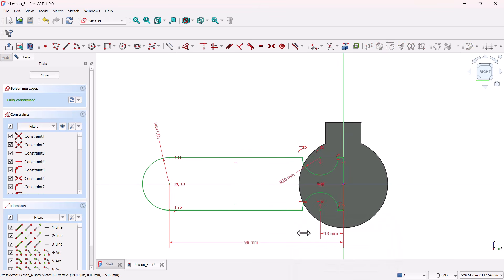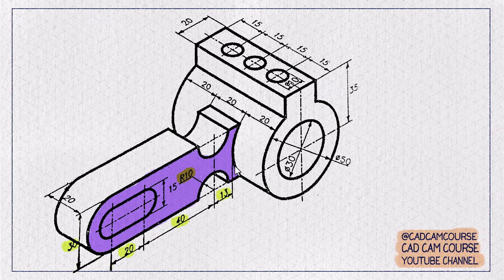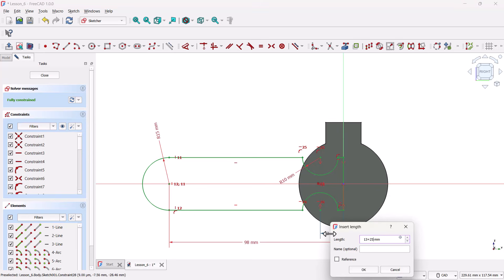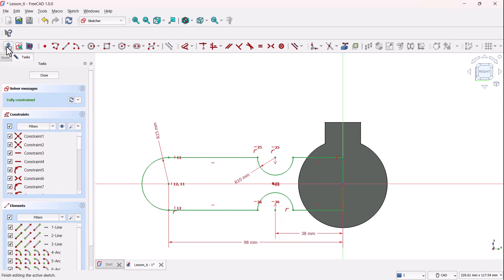Wait, nope, that's not quite right. Forgot to account for the cylinder's radius. Since we're designing to the outer edge, it should actually be 13 plus 25, which gives us 38 millimeters. There, now the sketch turns green. Everything's fully constrained. Now, leave the sketch.